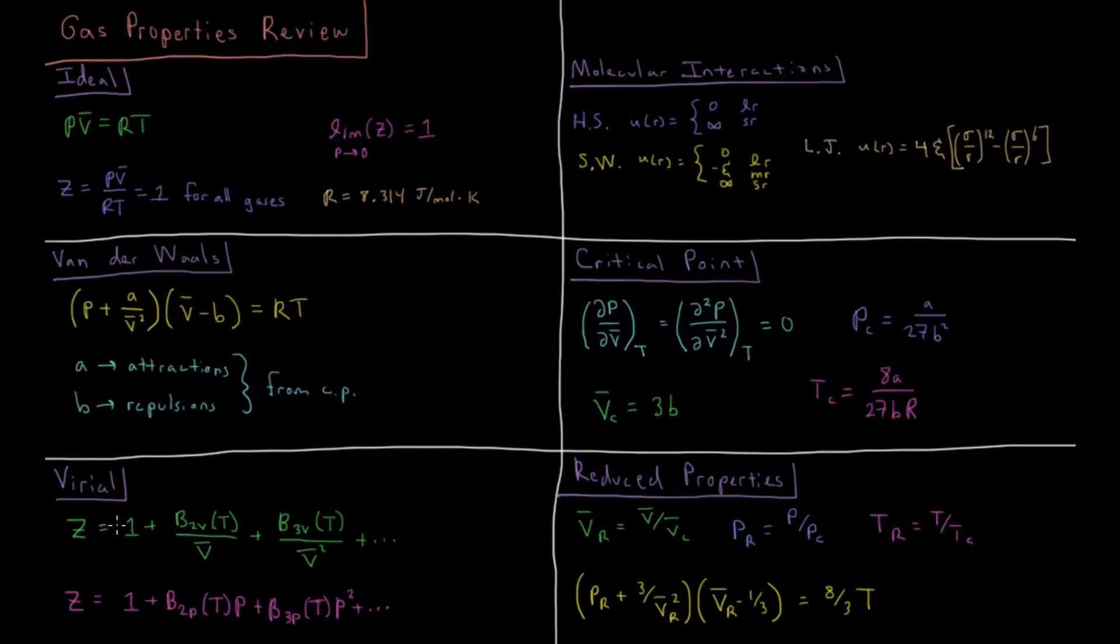Then we have the virial equation of state, where the compressibility factor Z is defined as a Taylor series which is equal to 1, the ideal state, plus successive corrections as a function of temperature.